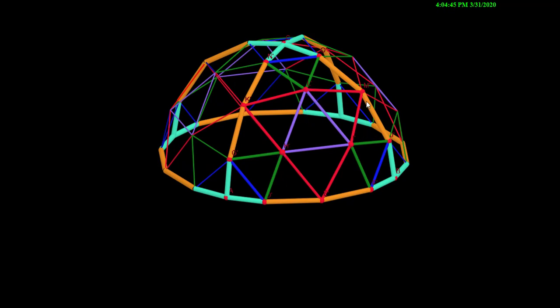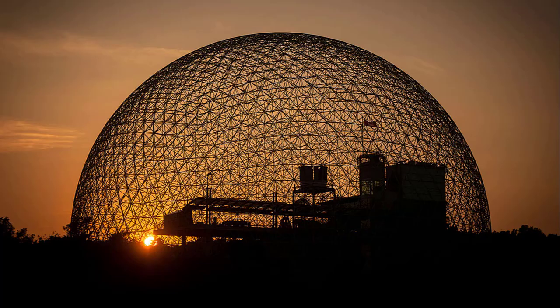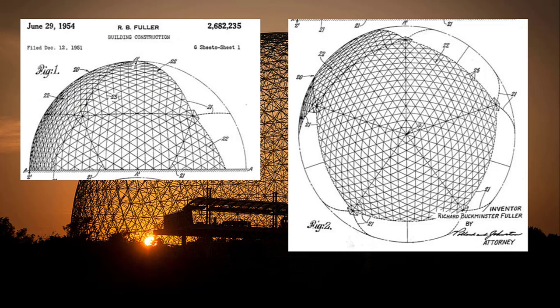So now, back to the biosphere. Here is part of the original patent application made by Buckminster Fuller. You can clearly see the top half of the icosahedron. Each face has been divided into equilateral triangles and the vertices have been projected onto the surface of the sphere. An incredible design, which in addition to its aesthetic qualities, is very strong and stable.